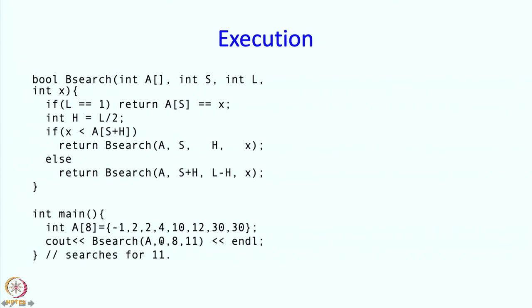So the first call is search A, 0, 8, 11. So how does this call execute? When this call starts executing, S has the value 0, L has the value 8, and X has the value 11. Then we do a check is L equal to 1. Well L is 8 and certainly not equal to 1, so this statement does not execute. At this point we are defining a new variable H whose value is going to be L by 2, so H becomes 4.